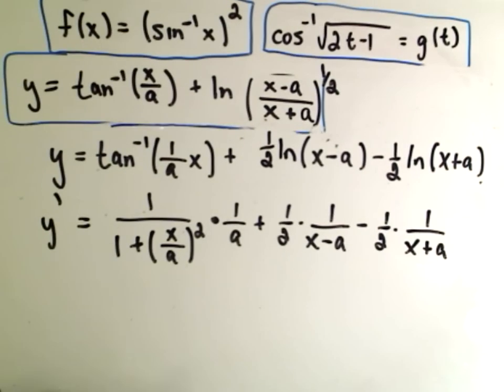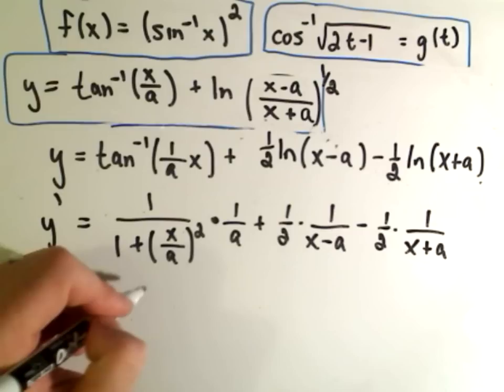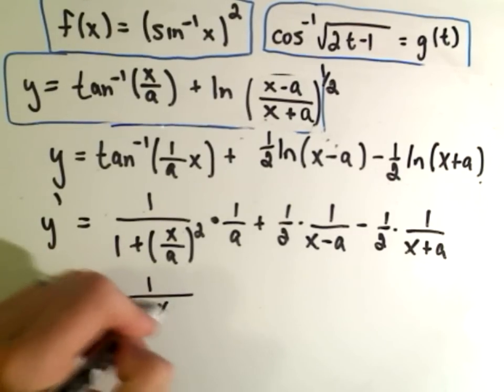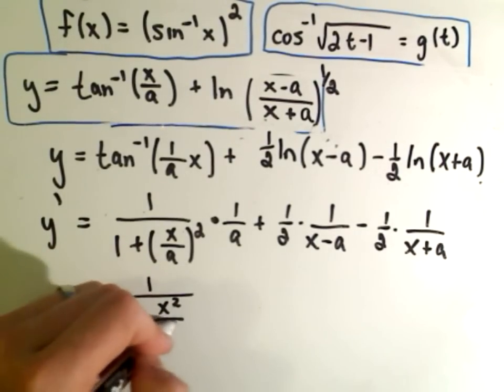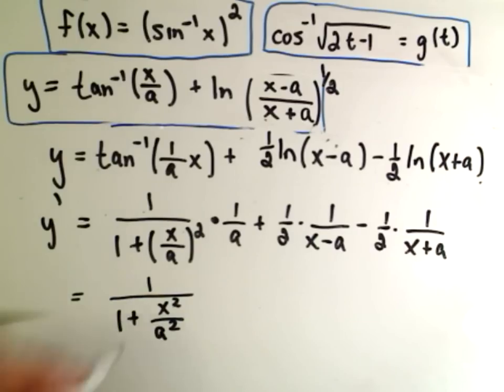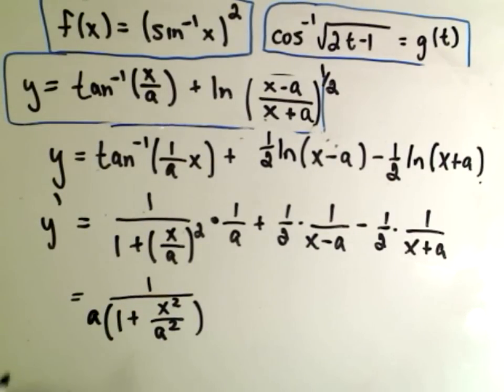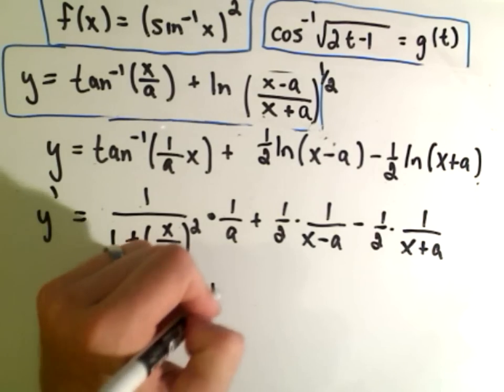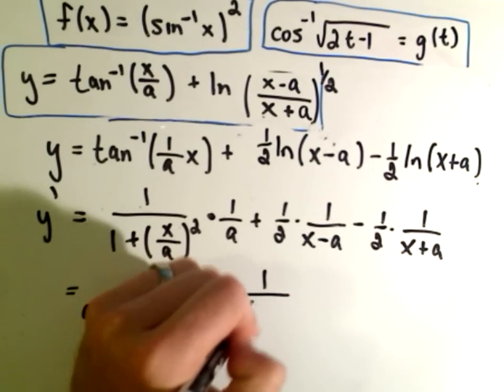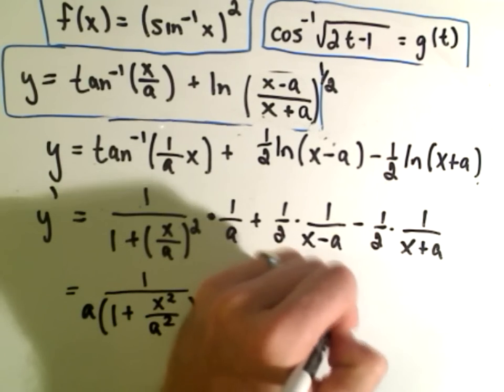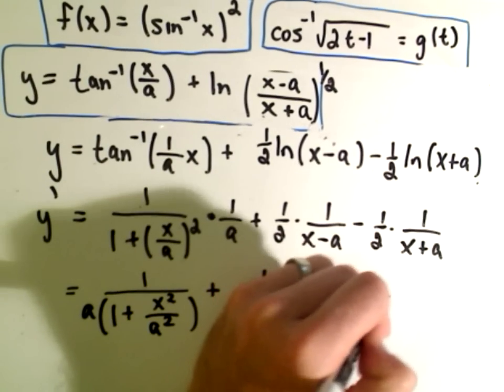So we get 1 over 1 plus x squared over a squared. I really don't know how much I want to clean this up. I could multiply the a into the denominator. And then we have 1 over 2 times x minus a, minus 1 over 2 times x plus a. Let's see. A couple other things we could do here. I'm trying to think if it would actually be useful.